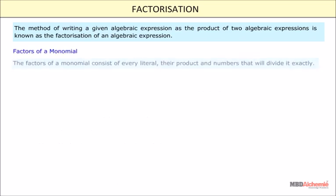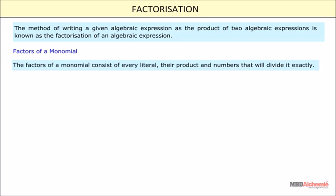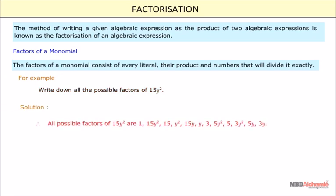Factors of a monomial. The factors of a monomial consist of every literal, their product and numbers that will divide it exactly. For example, write down all the possible factors of 15y square. The possible factors of 15y square are: 1, 15y square, 15, y square, 15y, y, 3, 5y square, 5, 3y square, 5y, and 3y.